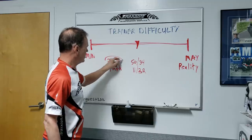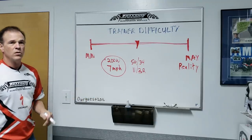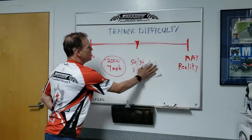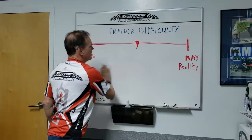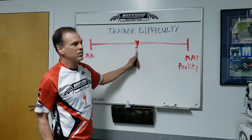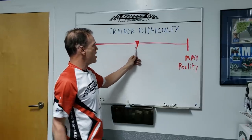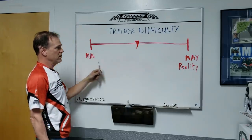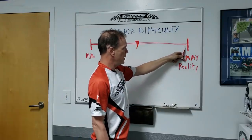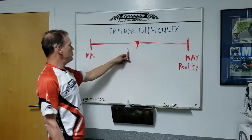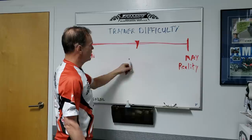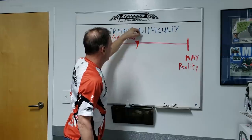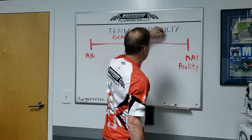But no matter what I did, 200 watts was seven miles an hour. So let me explain this in a way that's easier to understand. What this really is — this is a gearing selector. You can effectively put bigger or smaller chainrings on your bike, or put a smaller or bigger cog on your cassette.